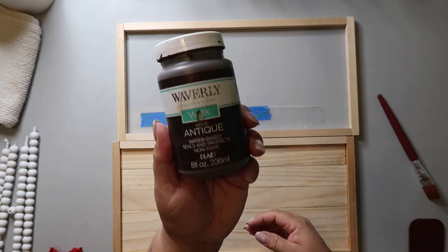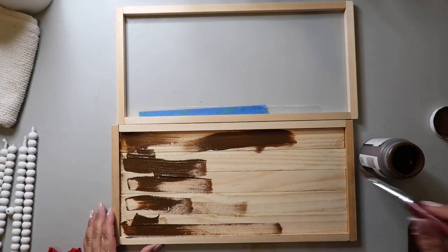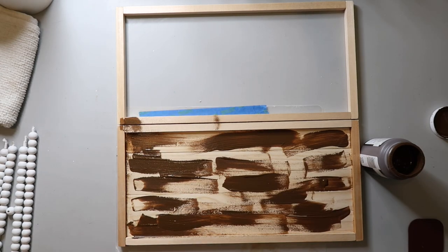On this I'm using my favorite Waverly wax in the color Antique, painting it on the top of the tray, and then I'll use a damp cloth to wipe off the excess.